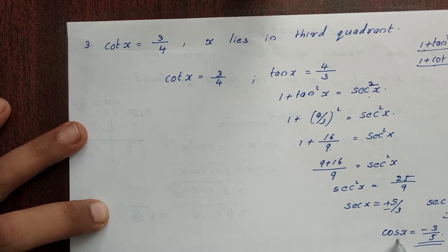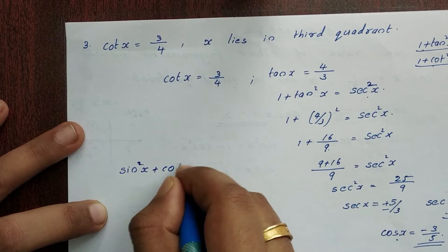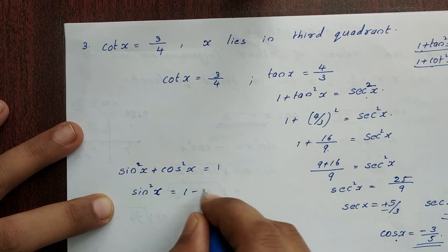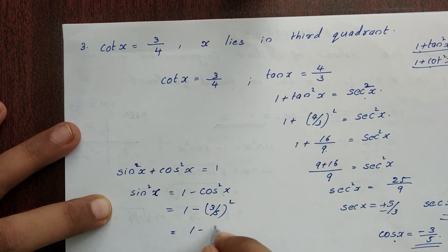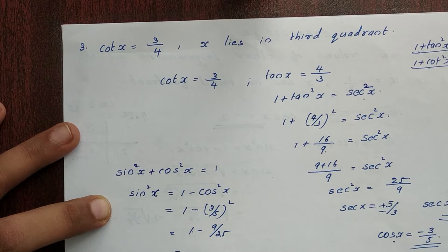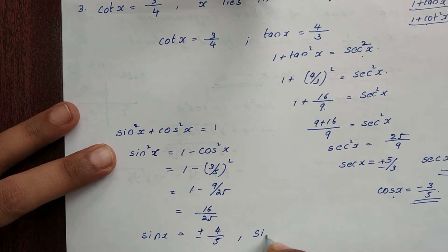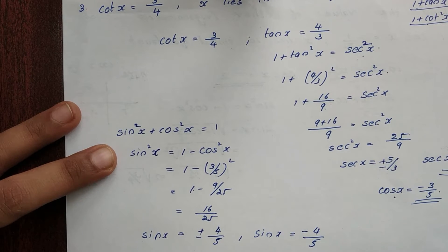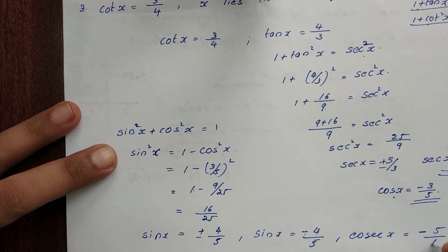Now we find sin x. Using sin²x plus cos²x equals 1, cos²x equals 1 minus sin²x. That is 1 minus (3/5)², giving 1 minus 9 by 25, which equals 16 by 25. So sin x is plus or minus 4 by 5. In the third quadrant, sin is negative, so sin x equals minus 4 by 5.